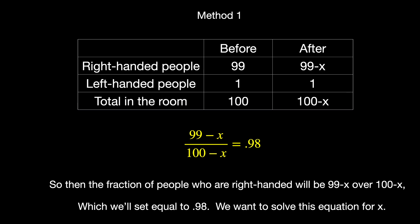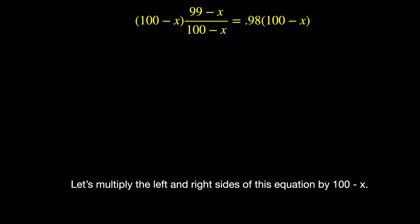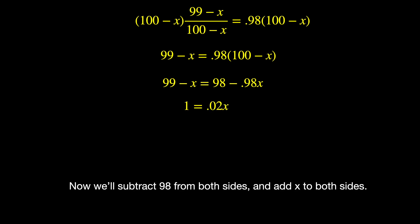We want to solve this equation for x. Let's multiply the left and right sides of this equation by 100 minus x. Next, we'll apply the distributive law. Now we'll subtract 98 from both sides and add x to both sides.